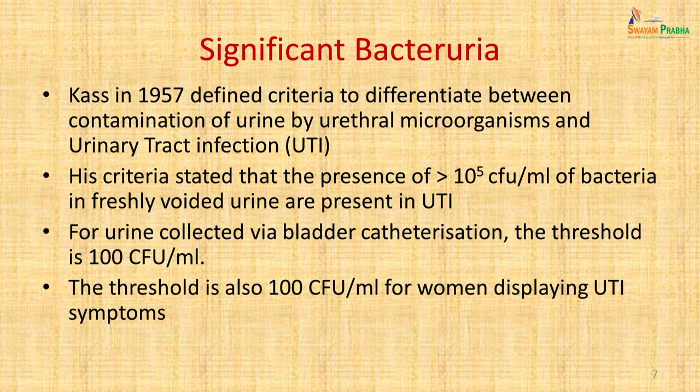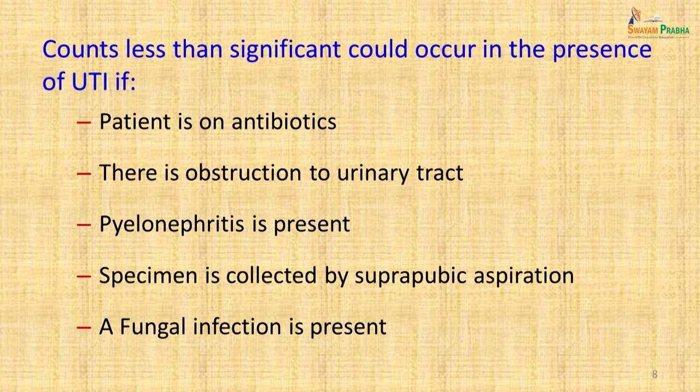When diagnosing urinary tract infection, the patient must have enough bacteria in the urine. Urine in the bladder is sterile, but as it passes through the urethra it collects organisms from the skin surface. Kass in 1957 defined criteria to differentiate urethral contamination from true infection: more than 10⁵ organisms per ml of freshly voided urine indicates UTI. For catheterized urine, the threshold is 100 colony-forming units per ml. For symptomatic women, 100 bacteria per ml is also accepted as significant. In a symptomatic patient, counts less than 10⁵ per ml should still be accepted as UTI.